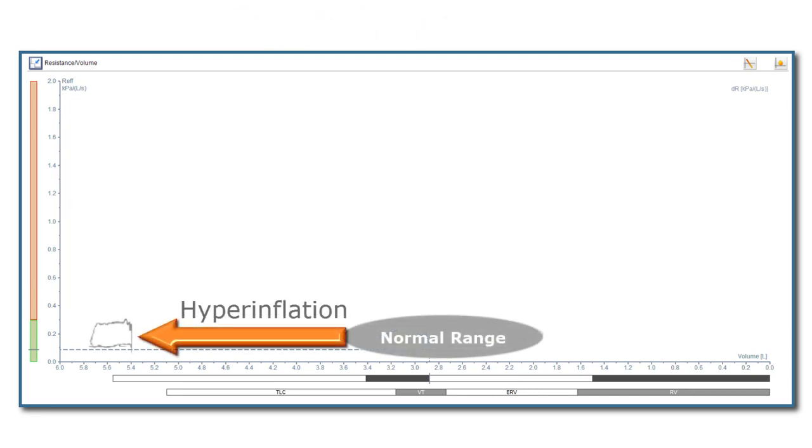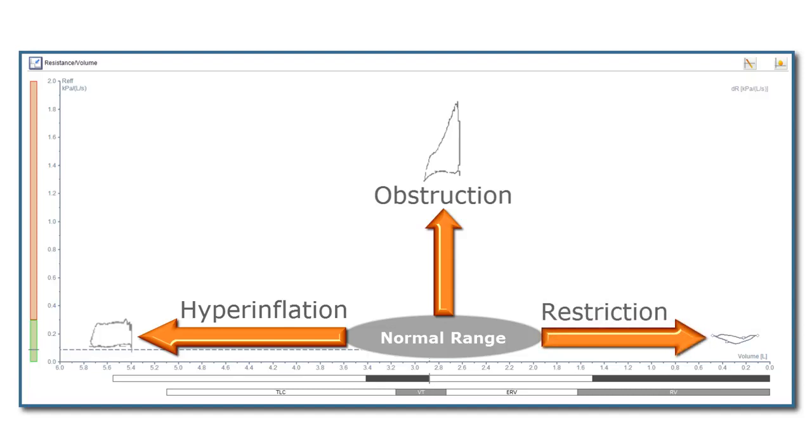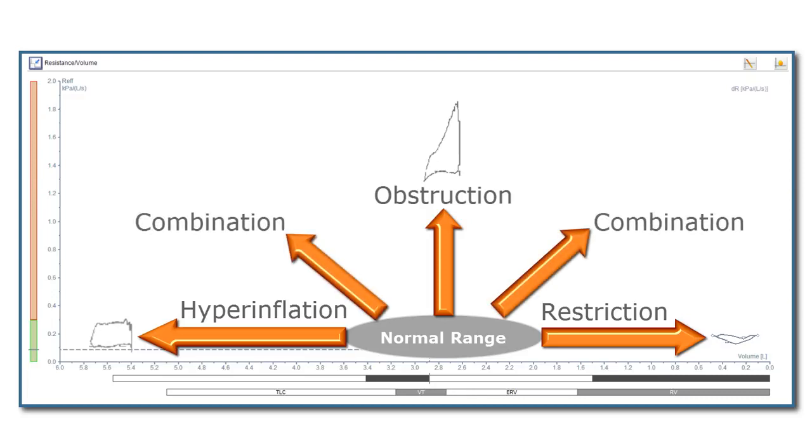When a patient has an elevated degree of hyperinflation, resulting in them breathing on a higher FRC level, the resistance-volume loop will shift to the left. If the airways obstruction of the patient has increased, the resistance-volume loop will move upwards. In the case of restrictive lung diseases, the resistance-volume loop shifts to the right, caused by a reduction of lung volume. Of course, a combination of the different impairments is also possible.